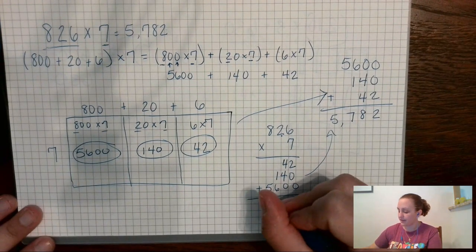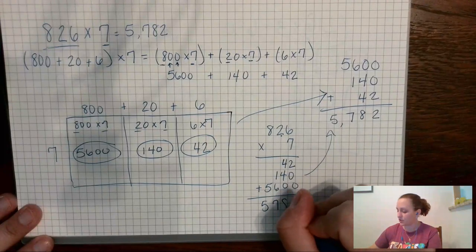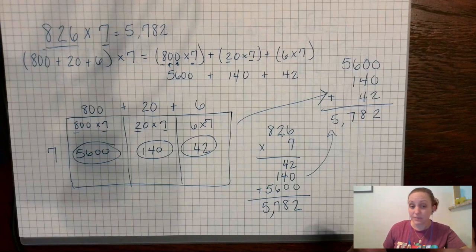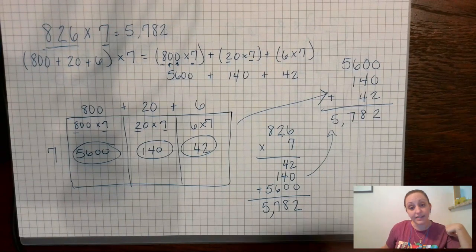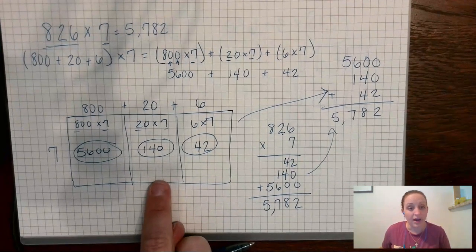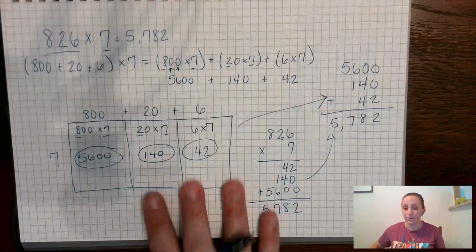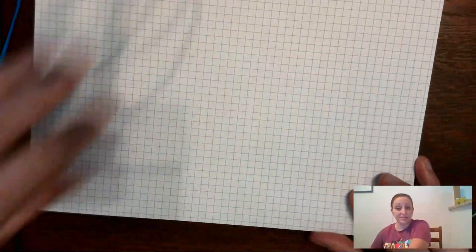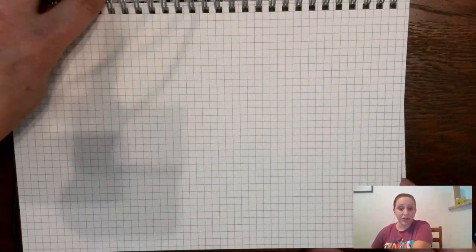Whichever strategy works best for your brain is the one you're going to want to pick. I like the box method because it helps keep you organized — that's why I always go this way. Let's do one more example to show the three strategies one more time. You can watch this video as many times as you need to before you do your lessons to make sure you understand the strategy you want to pick.